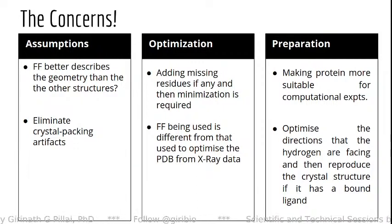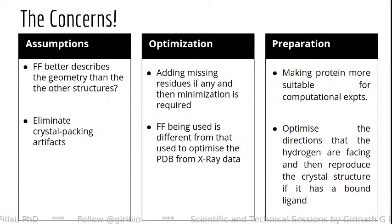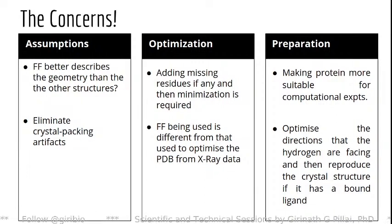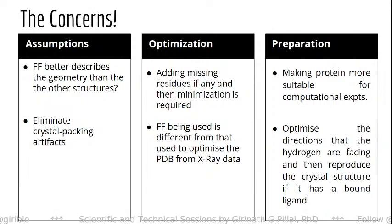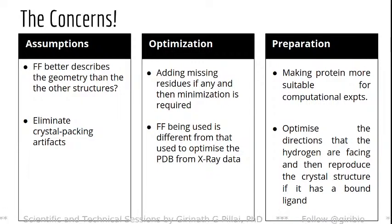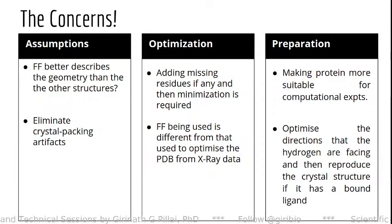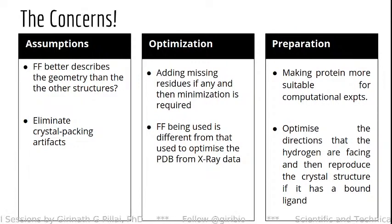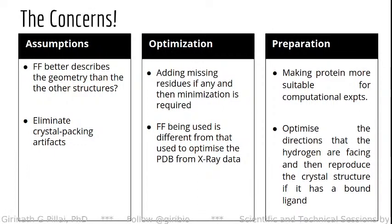Whatever you do in a tutorial will work because the tool creator knows the example data works. The question is whether it works for your biological system or macromolecule. We want to optimize the directions the hydrogens are facing and try to reproduce the crystal structure if it has a bound ligand — that is where you get RMSDs less than 1 Ångström. The direction of hydrogen is very important, which is what we call protonation. Optimizing hydrogen directions and orientations is also very important, and certain algorithms take care of that, but you have to ensure they are correct.